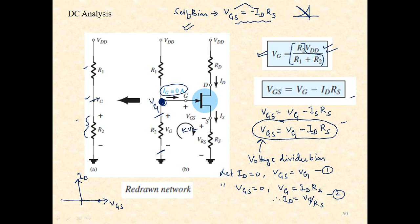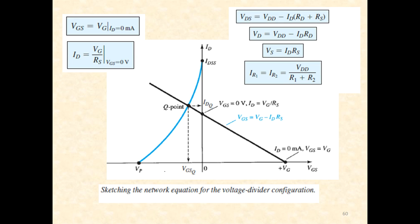On the IDS versus VGS graph: when ID is zero, VGS equals VG — giving the first point on the VGS axis. When VGS is zero, ID equals VG/RS — giving the second point on the ID axis. Join these two points and extend the line so that where it intersects the transfer curve gives the Q point.